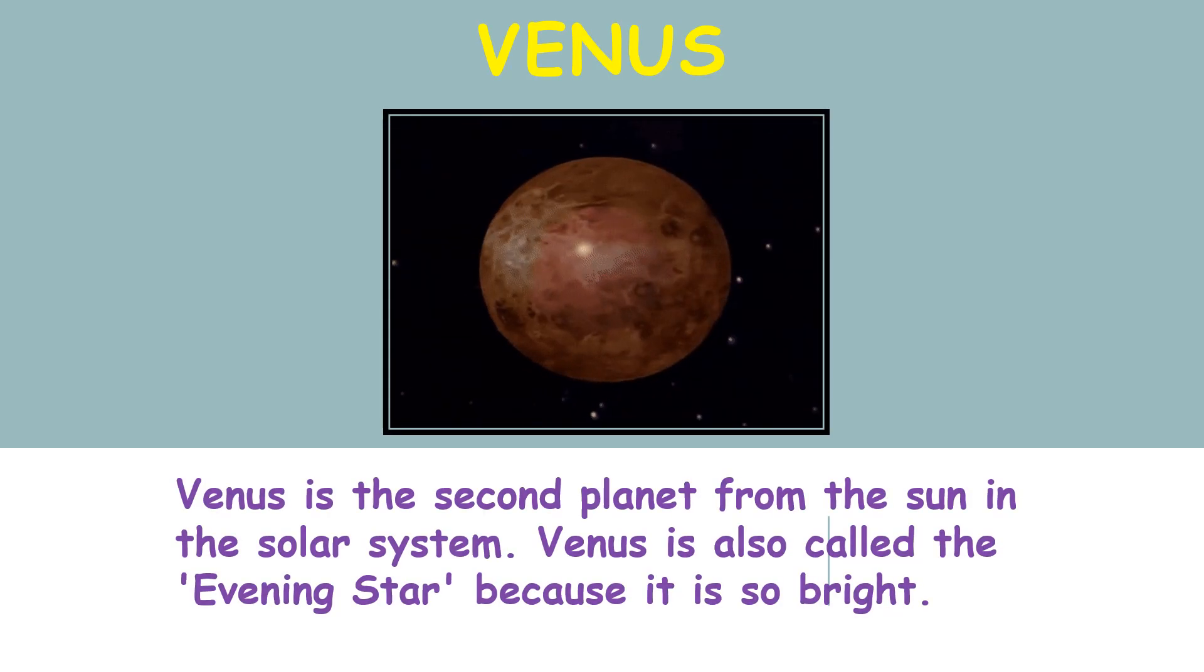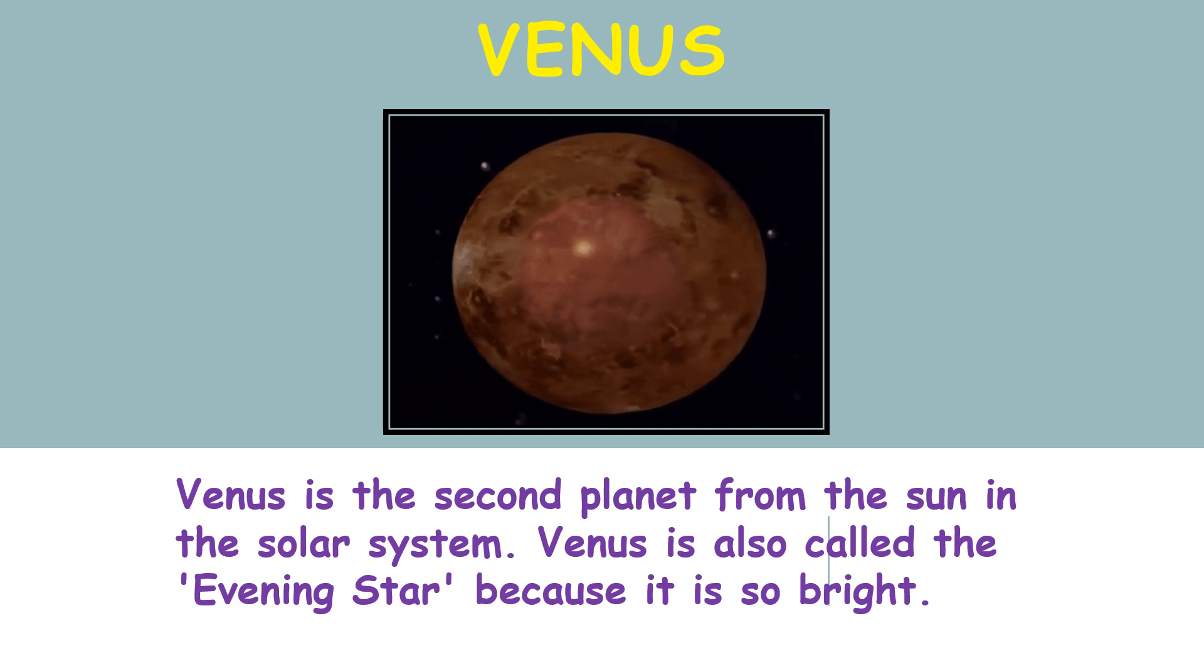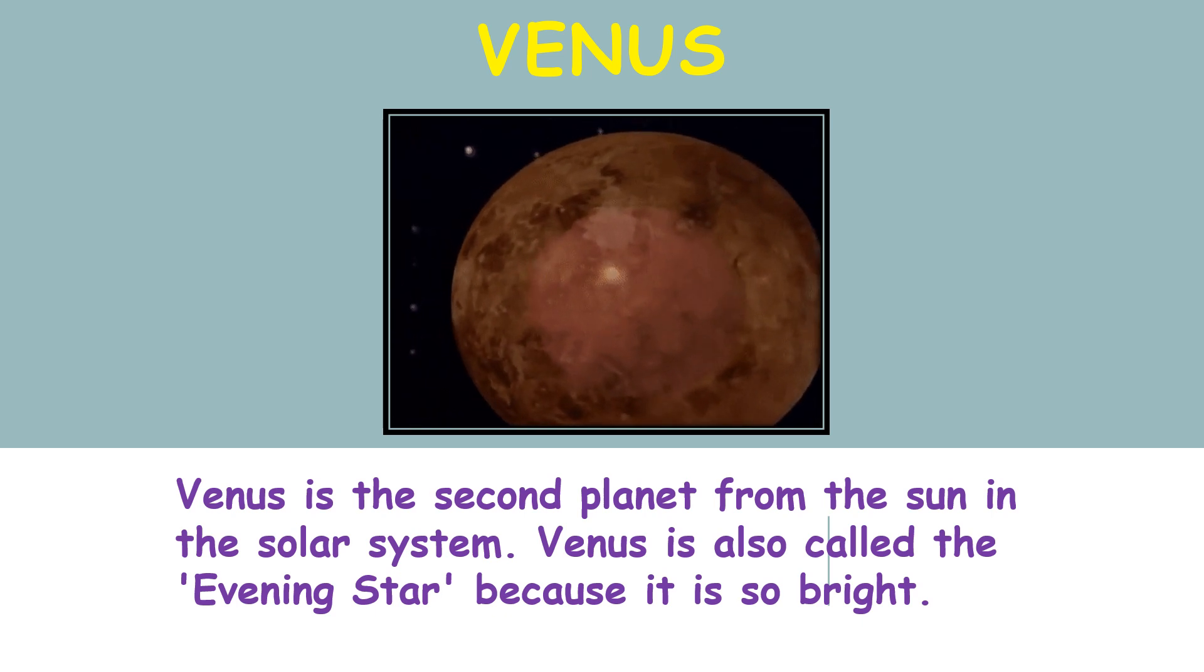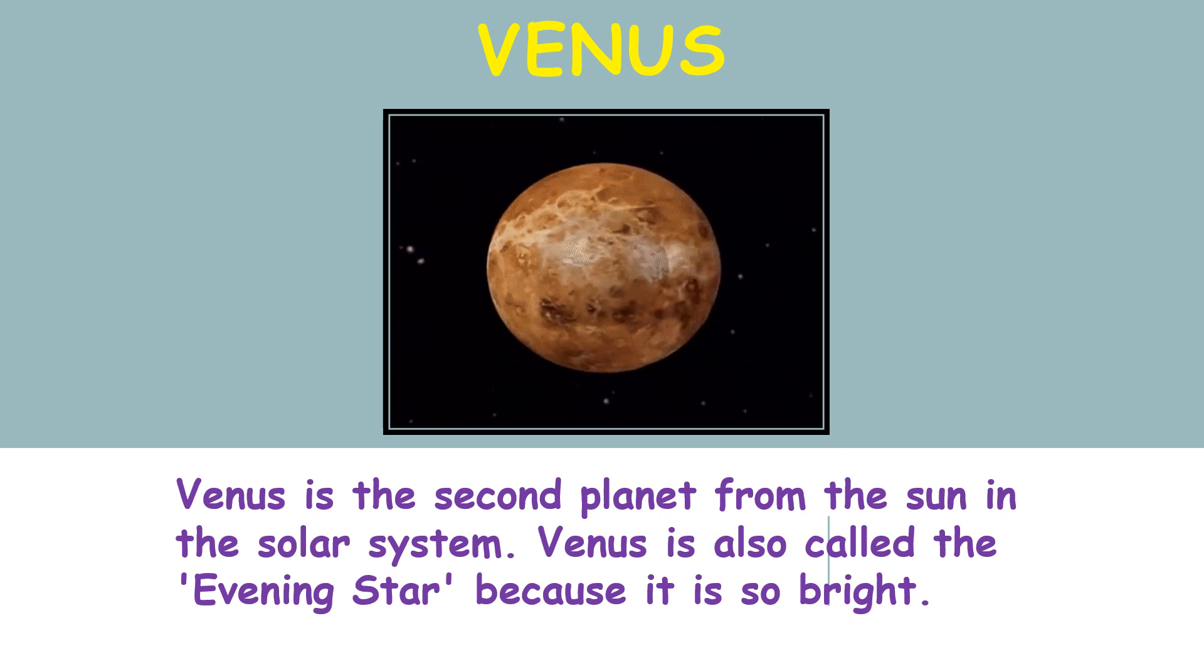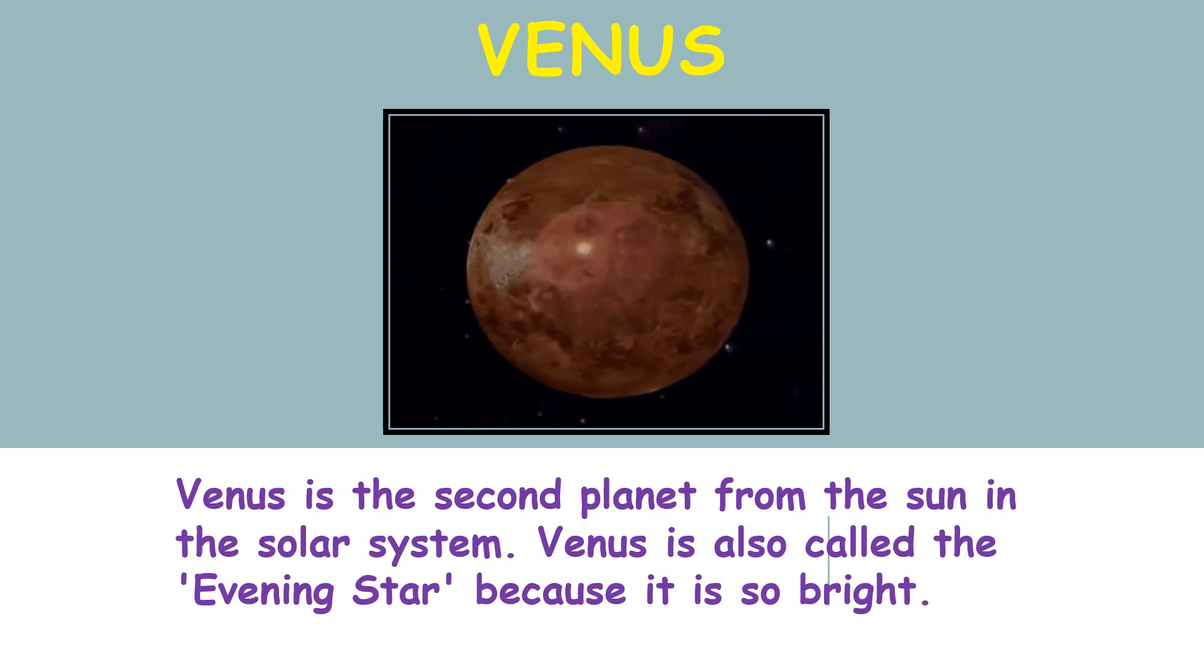Venus is the second planet from the sun in the solar system. Venus is also called the evening star because it is so bright.